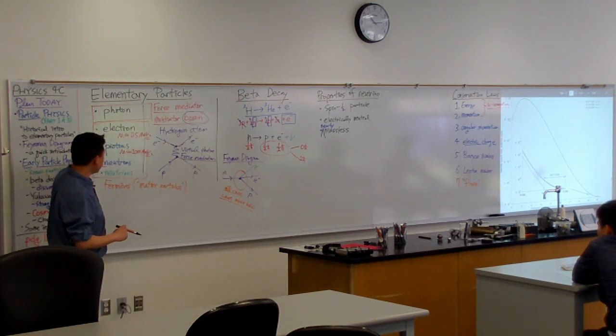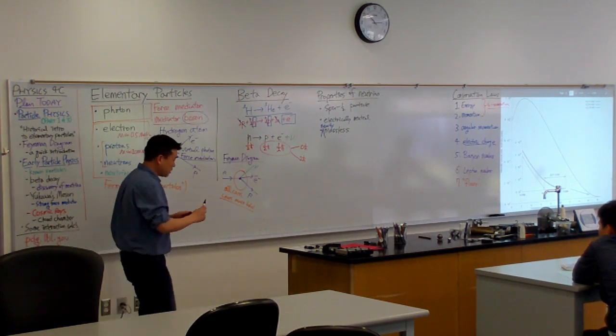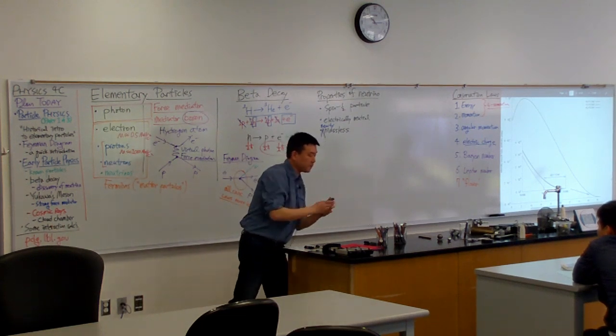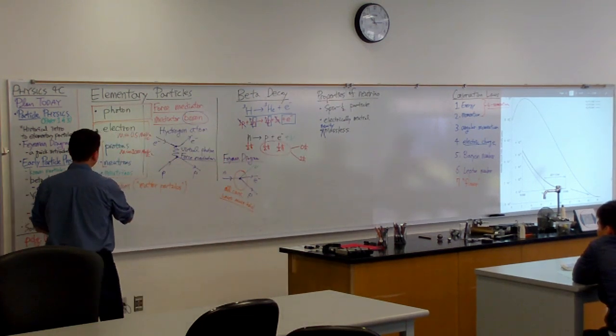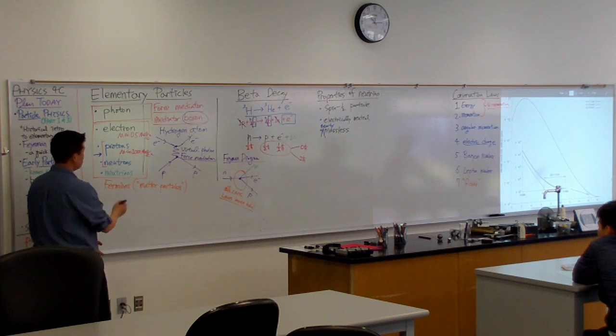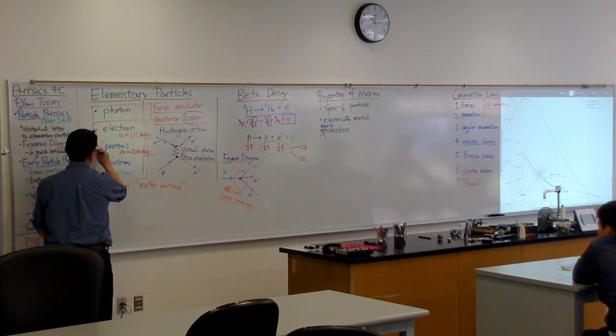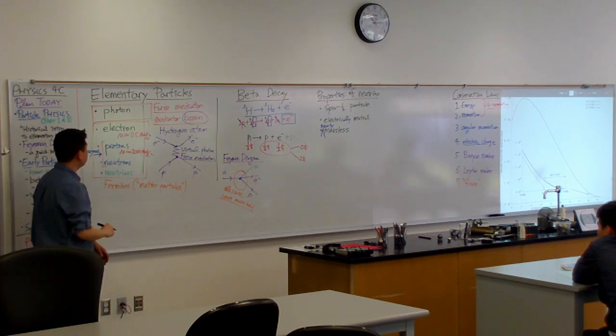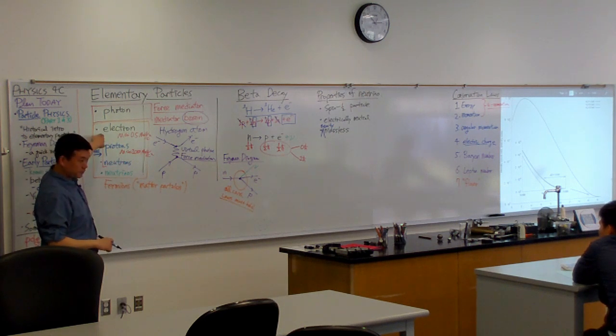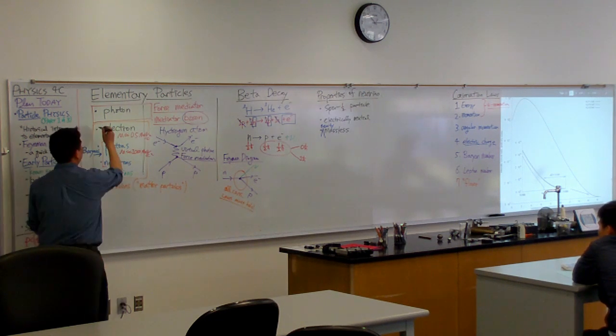But they have similar mass. So the initial classification that people came up with is that they were calling these the heavy particles, or baryons. And they called electron light particle, or lepton.